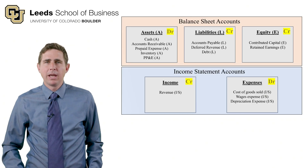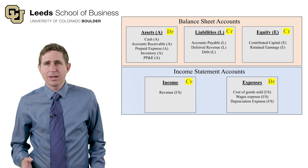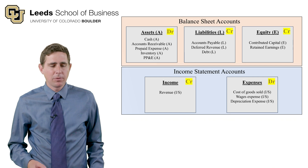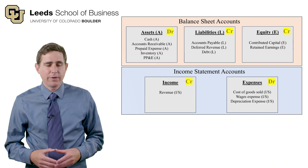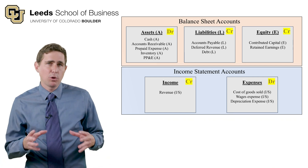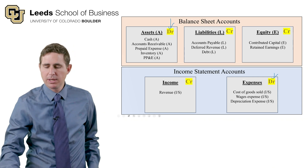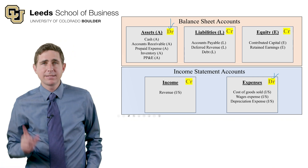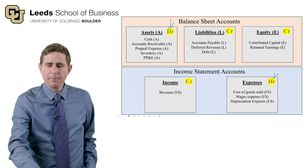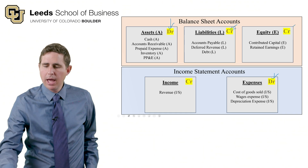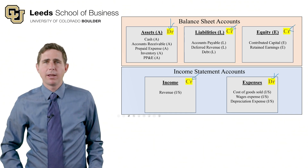This is just a reminder of our balance sheet accounts and our income statement accounts — it's a cheat sheet. If you have an asset account and you want to increase it, you increase it with a debit. The same with expenses. Asset and expense accounts increase with a debit. Liabilities, equity, and income accounts increase with a credit.